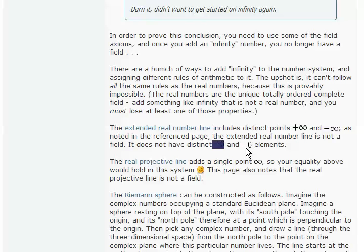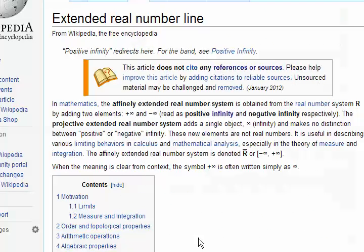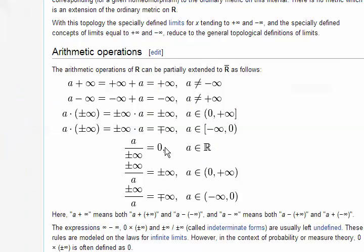but it does not have distinct plus 0 and minus 0 elements. To claim that these two points are distinct but these two are not seems like they should have a reason for insisting on that. I'm not sure if there's any other reason that they have for insisting on that other than they have defined it to be so.